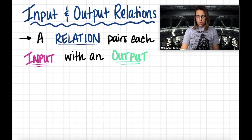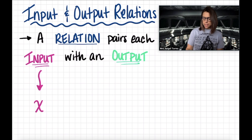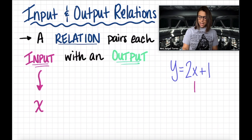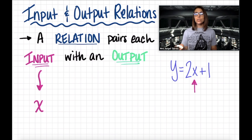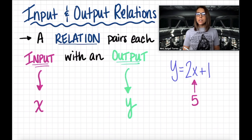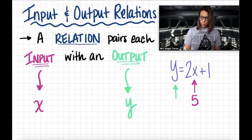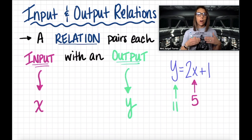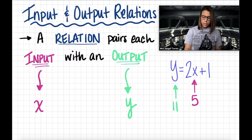So what does this look like in math? Your inputs are almost always going to be represented as X. Think of an equation, maybe something like Y equals 2X plus 1. The X would represent any number that you want to input — that's where the word input comes from — and that would produce what's called an output, which is normally your Y value. For example, if I input 5 for X: 2 times 5 is 10, plus 1 is 11, which means my output would be 11, and that's how the two are related to each other.